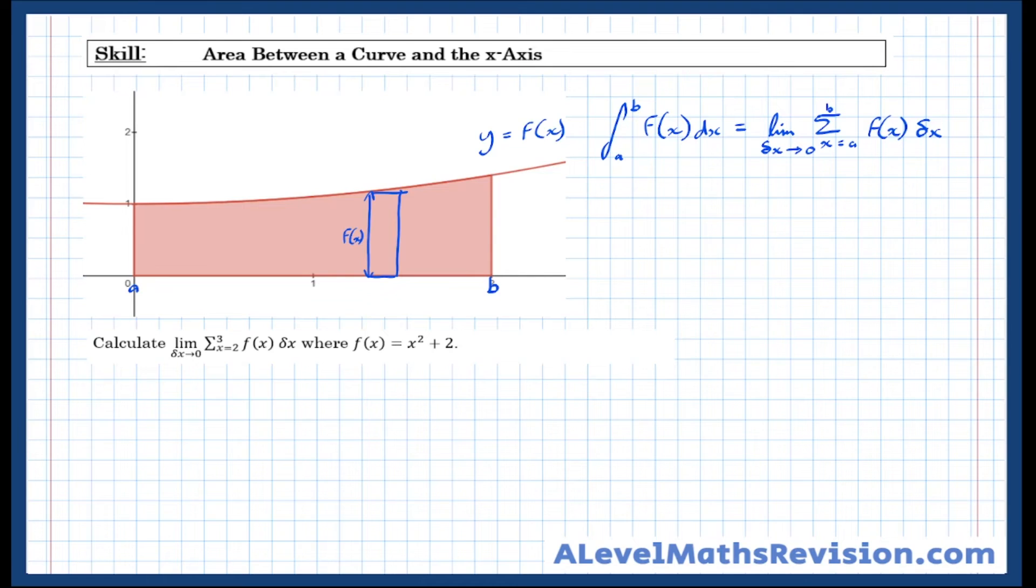So an example of a question that uses this notation is one like this. Calculate the limit as delta x approaches 0 of the sum between 2 and 3 of f of x delta x where f of x equals x squared plus 2.